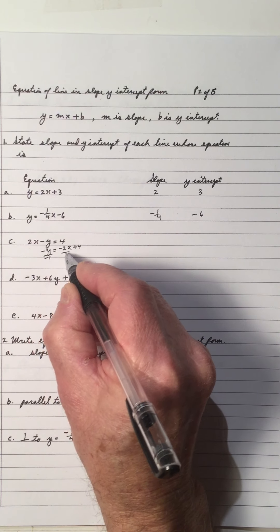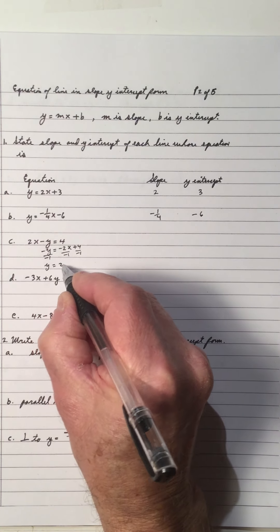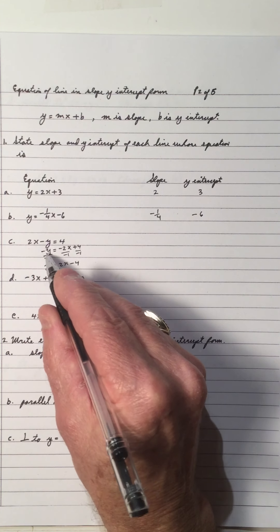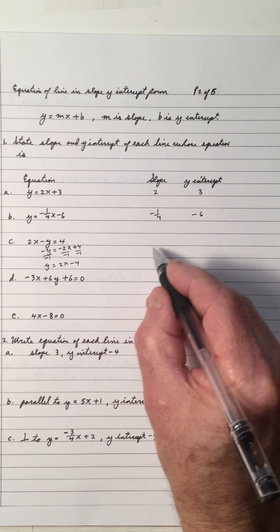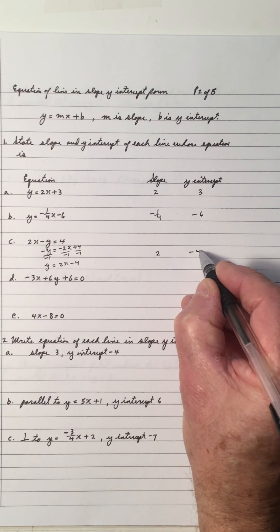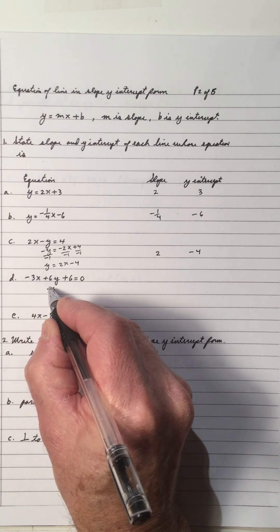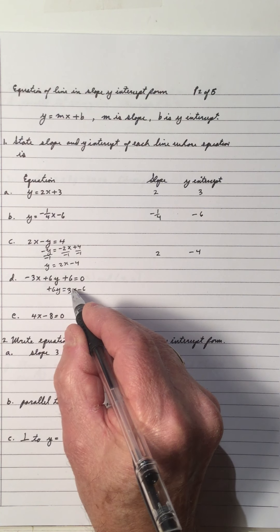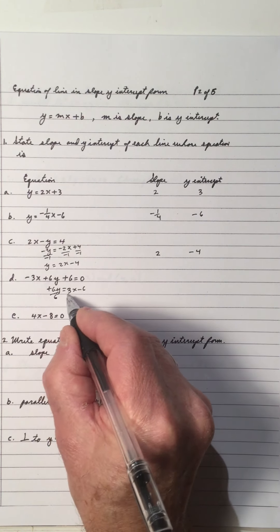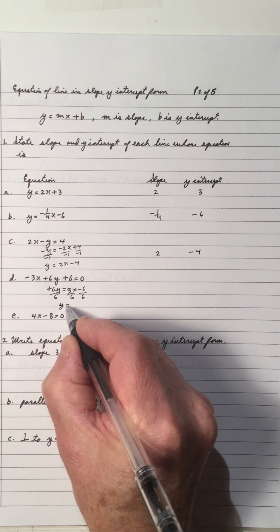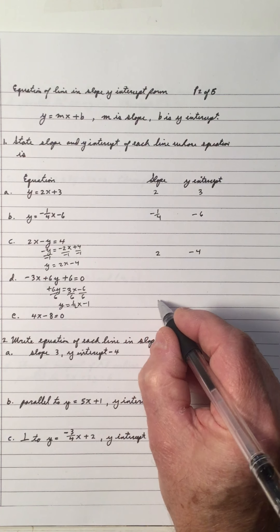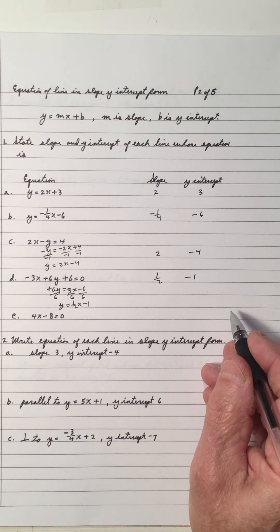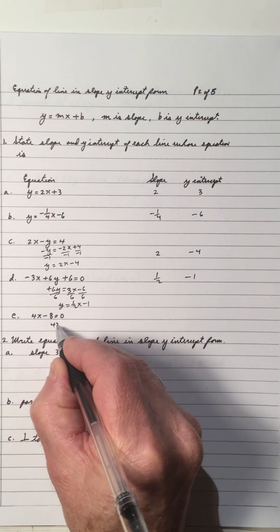In this one we have to move the 2x to the right, change the sign, and divide by negative 1, because slope y-intercept form is solved for y: y equals mx plus b. So moving the 2x over gives minus, divide by negative 1, giving slope 2 and y-intercept negative 4. Solving another equation for y: negative 3x moves over to become positive, 6 moves over to become negative, divide by 6, giving y equals one-half x minus 1. So the slope is one-half and the y-intercept is negative 1.